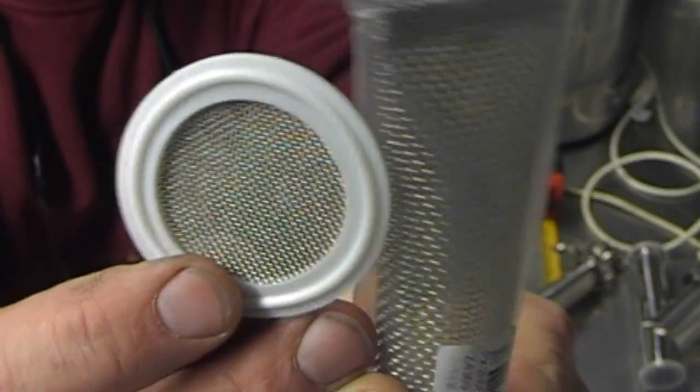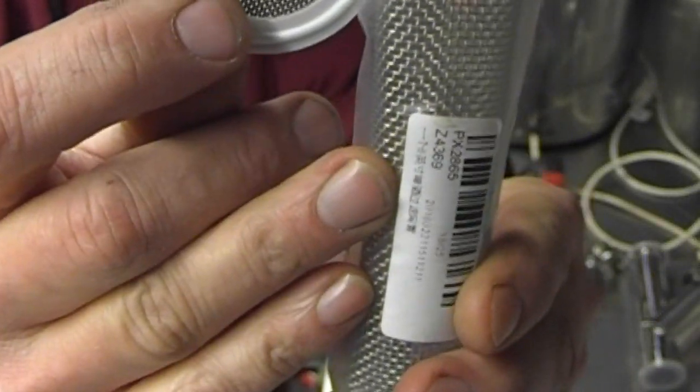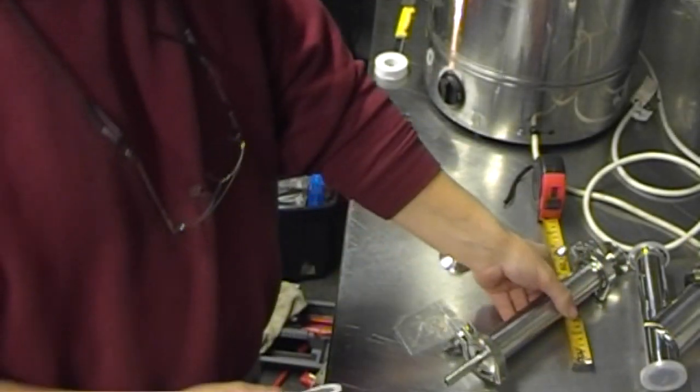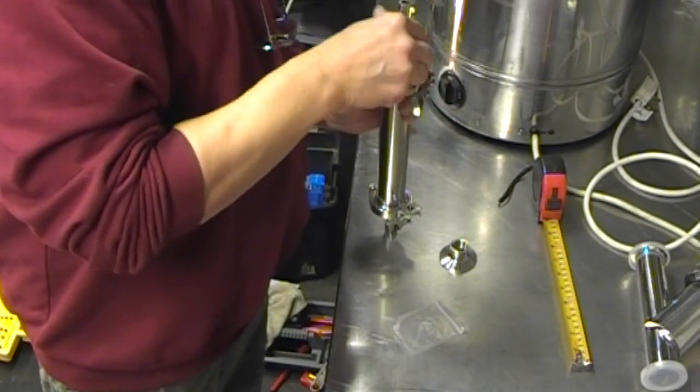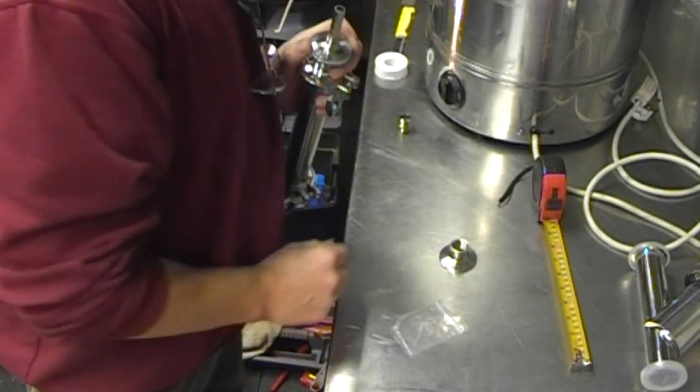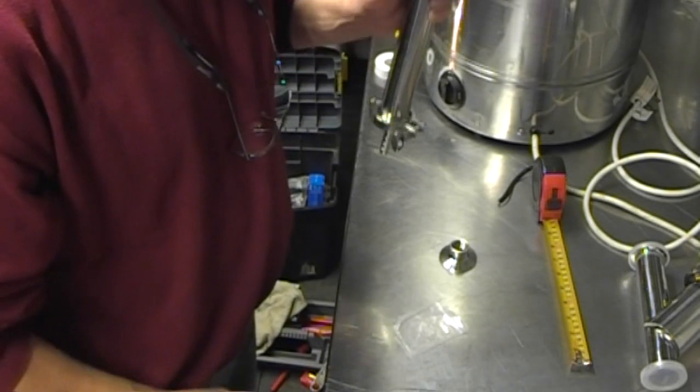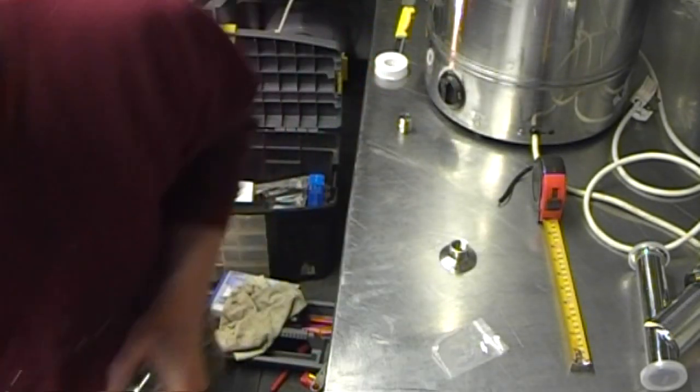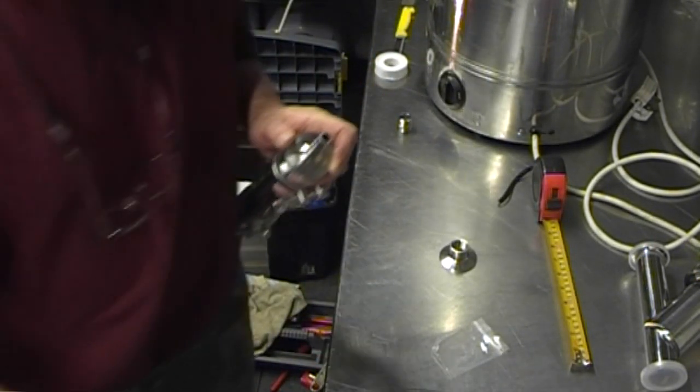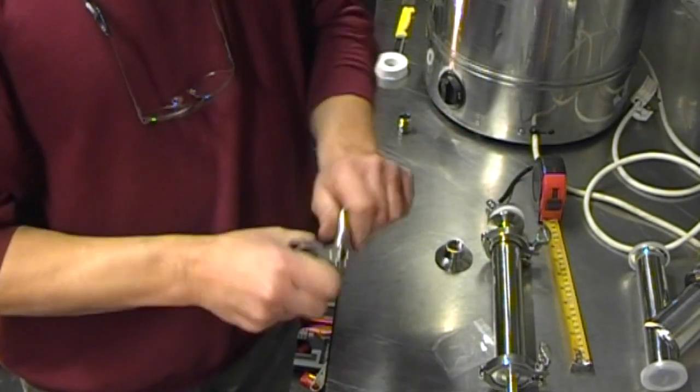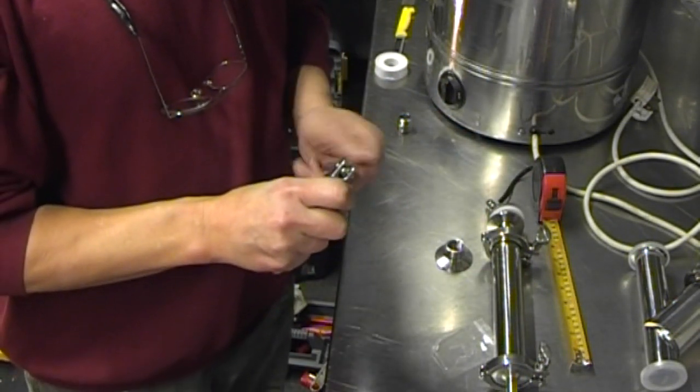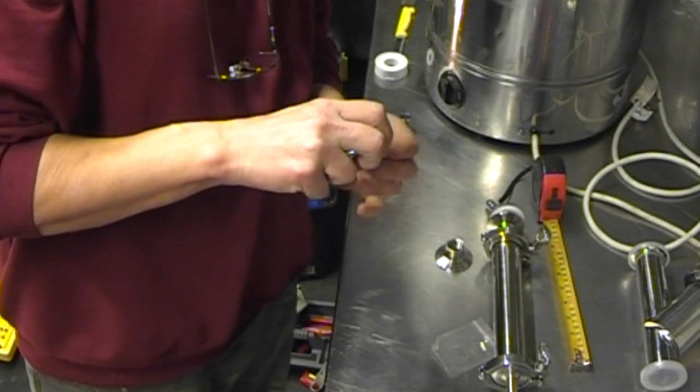So all we could do is just pop that as a secondary filter so anything that gets through the hop screen. Lost my tri-clamp now, I need another one don't I. Just sort out another one, you can never have enough of these and I bought a job lot.